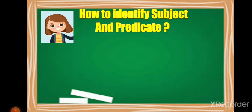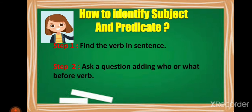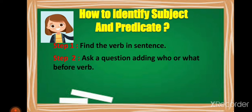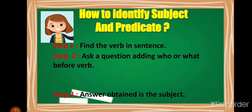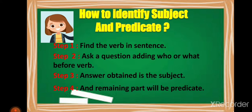How to identify subject and predicate? In any given sentence, there are some steps to follow. Step one: find the verb in the sentence. Step two: ask a question adding 'who' or 'what' before the verb. Step three: the answer obtained is the subject. Step four: the remaining part will be the predicate.